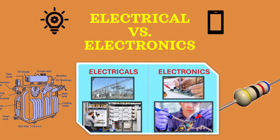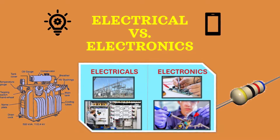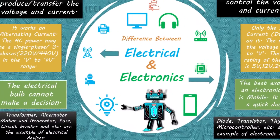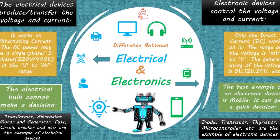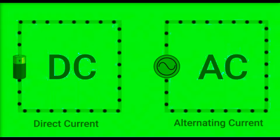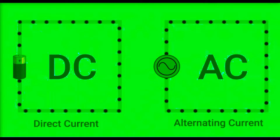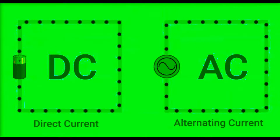The term electrical deals with the flow of electrical power or charge, whereas electronics deals with the flow of electrons. There is only a minute difference between electrical and electronics, and both of them more or less deal with electricity. The most dominant difference is that electrical devices convert electrical energy into another form of energy like heat, light, sound, etc., while an electronic device performs control or switching operation of electrical energy for a particular task.